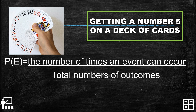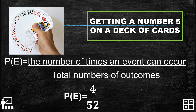The number of times the event can occur — we know there are four fives in a deck of cards. Why four? Because there are four suits: hearts, diamonds, spades, and clubs. So the number of times the event can occur is four. The total number of outcomes is the total number of cards in a deck, which is 52. So the probability for this event is four over 52.